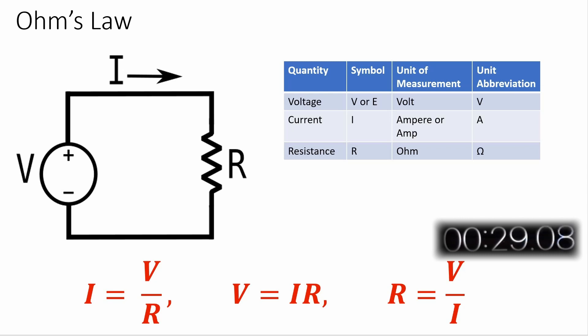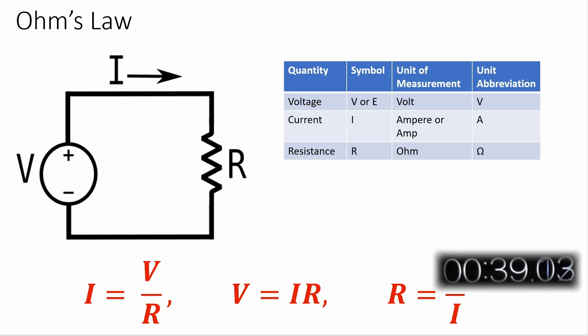Voltage is in volts, current is in amps, and the resistance is in units of ohms. These equations show all the versions of the mathematical relationship between voltage, current, and resistance described by Ohm's Law.